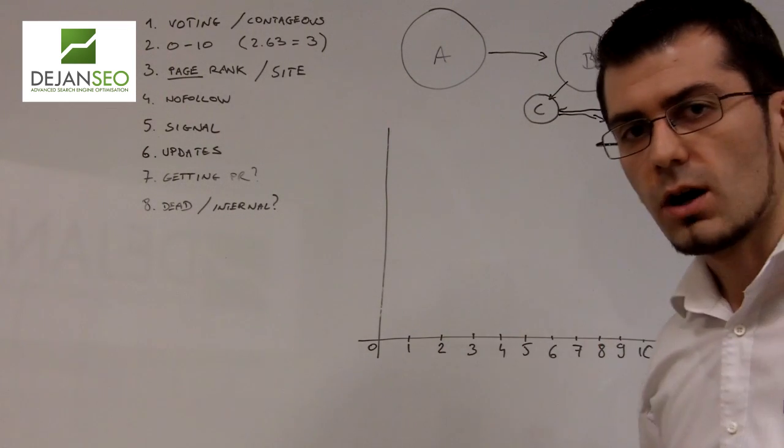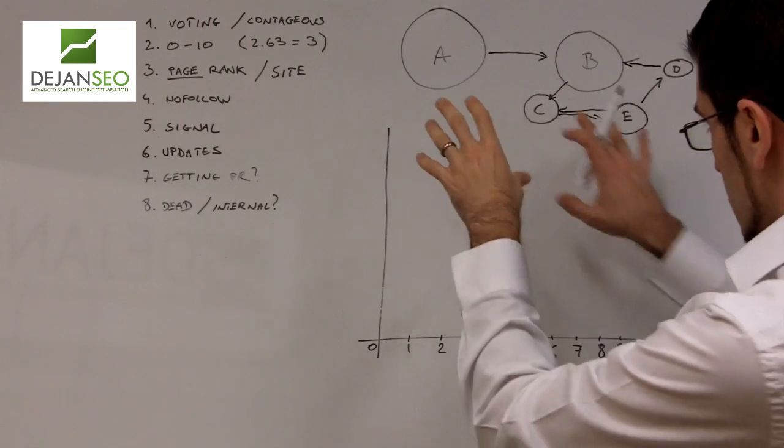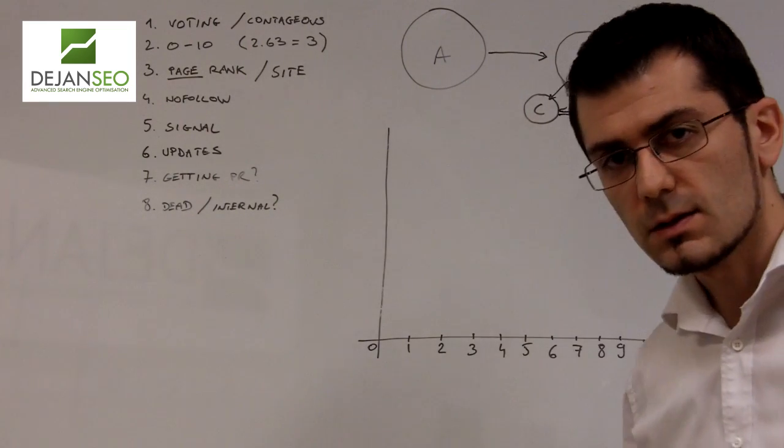Google analyzes this link graph and decides pretty much how these websites will be ranked based on this endorsement and reputation system.